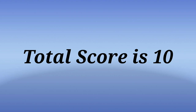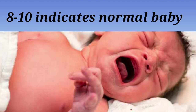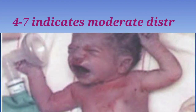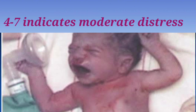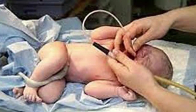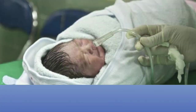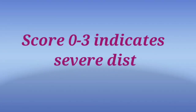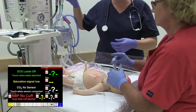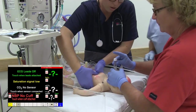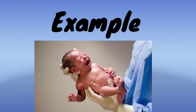The total Apgar score is out of 10. A score of 8 to 10 indicates a healthy baby requiring only routine newborn care. A score of 4 to 7 indicates moderate depression or distress, requiring initial resuscitation steps such as stimulation, suctioning, and oxygen administration. A score of 0 to 3 indicates severe distress, requiring full neonatal resuscitation.